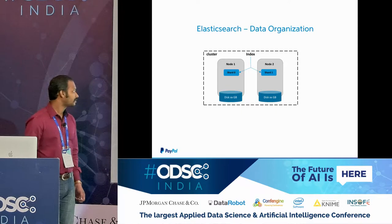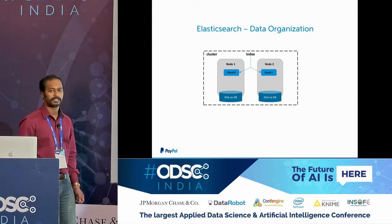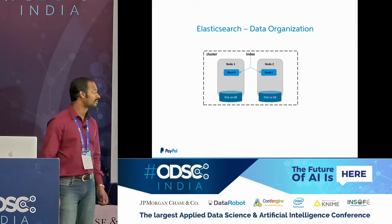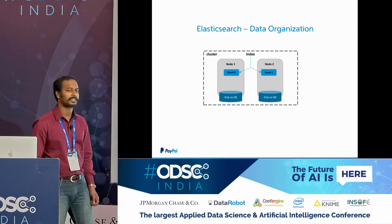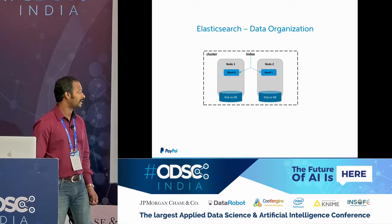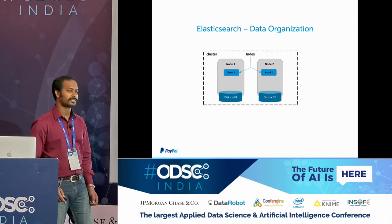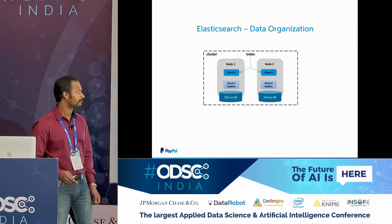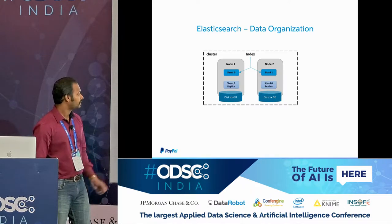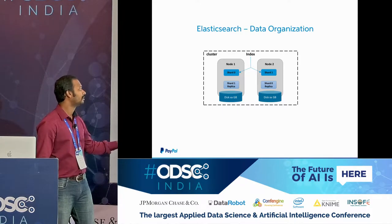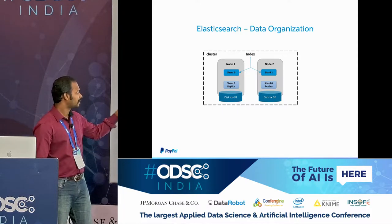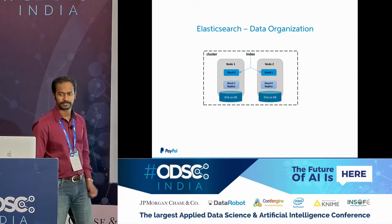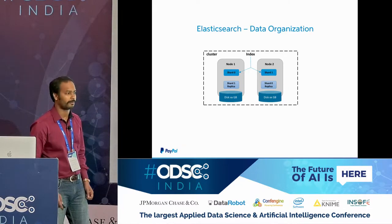If node one goes down, part of the data is lost. To address that, Elasticsearch has a built-in replication mechanism where every write is replicated to another node. So if node one goes down, shard zero will also be present in node two, so you won't have a problem with that.